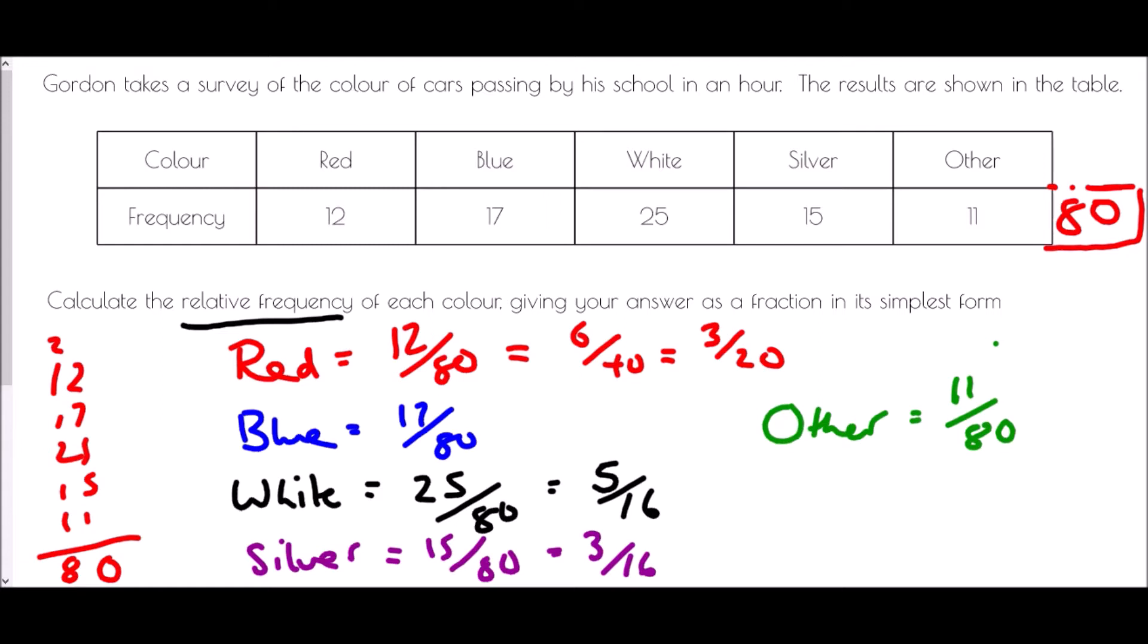And so what we can do with this relative frequency - now this is an estimate of the real probability. So if I wanted to, I could do some calculations to work out how many red cars I may expect to see the next hour and so on, depending on how many cars I see.